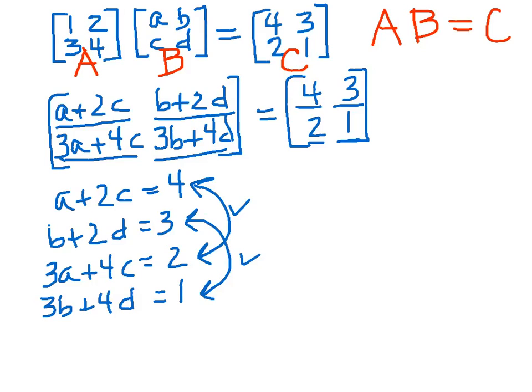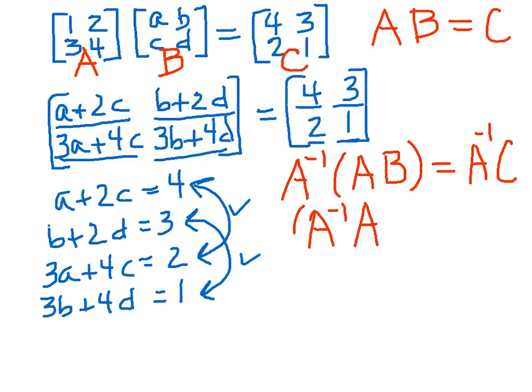On the left, we'll be multiplying A inverse times the product AB. And on the right, we'll just have A inverse times C. But on the left here, the order in which we do this multiplication really doesn't matter. So we can think of that as A inverse times A multiplied times B.